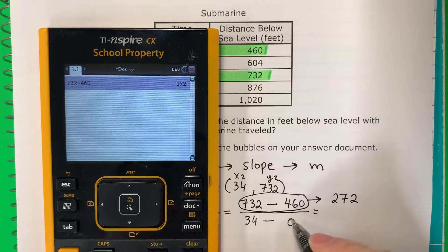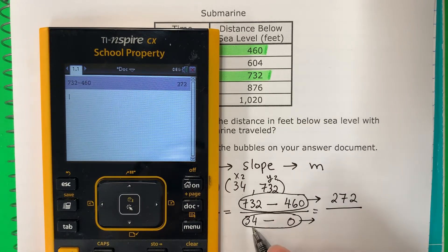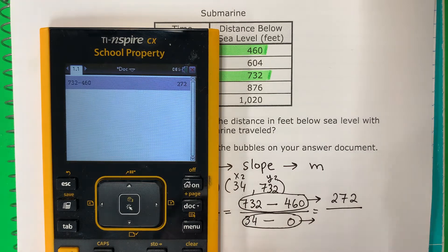Then we're going to go ahead and do 34. Oh, divided by, division. 34 minus 0, 34.